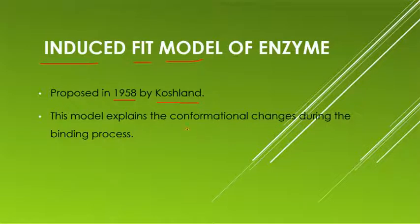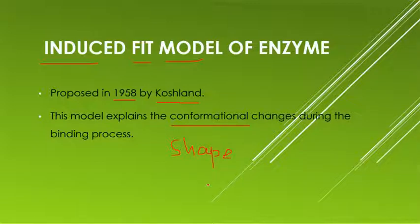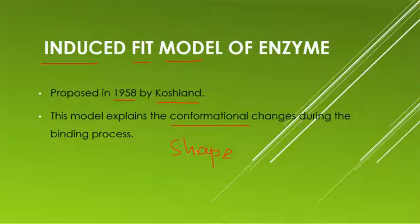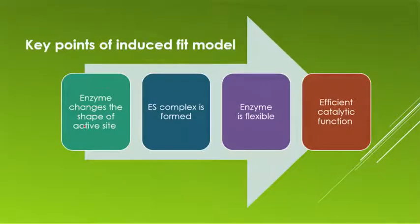This model explains the conformational changes during the binding process — conformational meaning shape changes. If you remember, the lock-and-key model stated that the enzyme is a rigid structure and cannot change its shape. However, in the induced fit model, Koshland proposed that the enzyme changes its shape when the substrate binds with it.